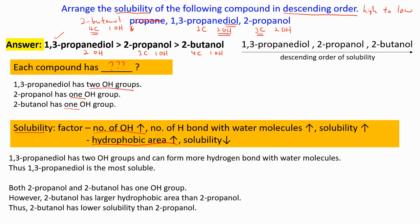Let's explain the first one. 1,3-propanediol has 2-OH groups and thus can form more hydrogen bonds with water molecules. Remember solubility you must mention with water molecules. Thus 1,3-propanediol is the most soluble or you can say it has the highest solubility.